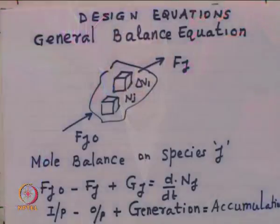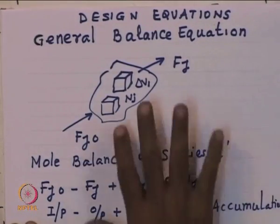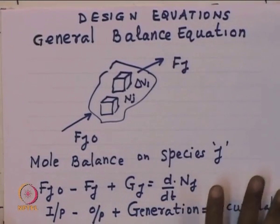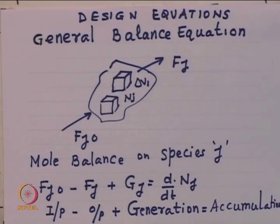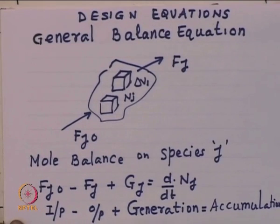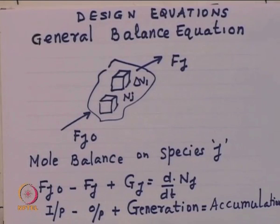This is a conceptual representation of what might be a reaction equipment — please do not think that this is how reaction equipment looks like. We have an enclosure of an arbitrary shape, deliberately chosen, in which a certain amount of fluid F_j0 is entering and F_j is leaving. We can write a material balance — we call it a mole balance — on any of the components that enter the system. F_j0 is the moles per time entering, F_j is the moles per time leaving, and G_j is the moles per unit time produced (or consumed, in which case it has a negative value). Input minus output plus generation equals accumulation — this is the fundamental statement of material balance.